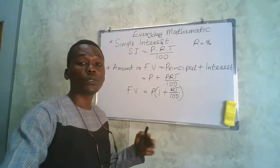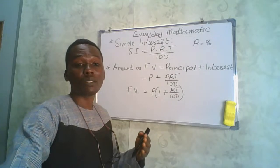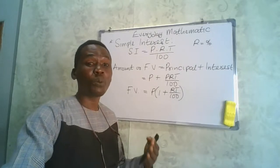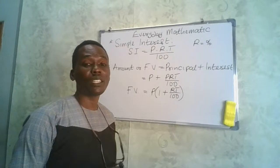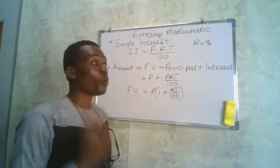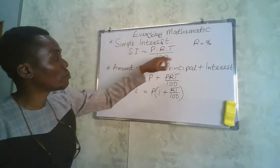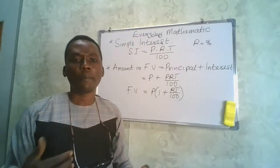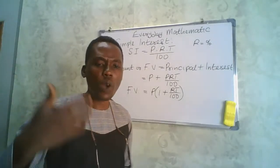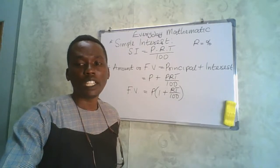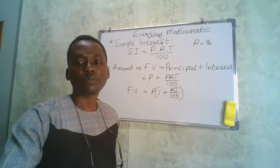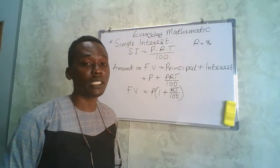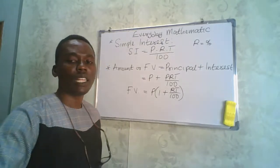Take note: in any exam, your JAM question might ask you to calculate the future value of an investment or the amount for that investment — don't be confused. The future value is just the principal plus the interest. Find the interest and add it to the initial principal. Let's now look at a JAM UTME question on simple interest.